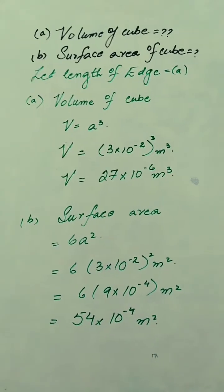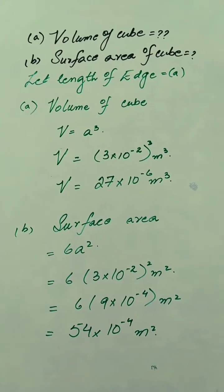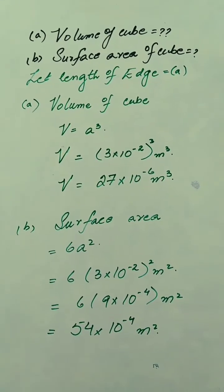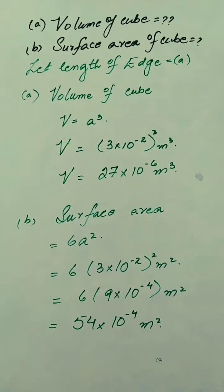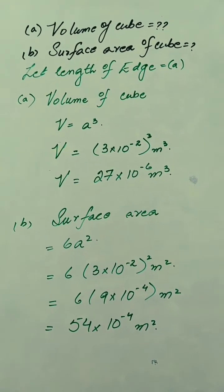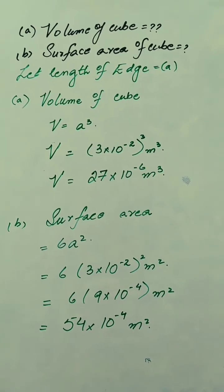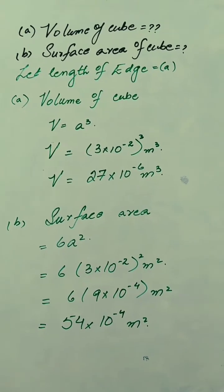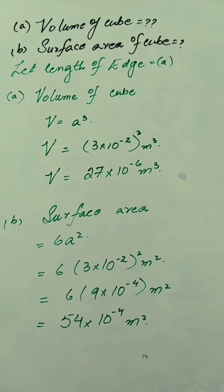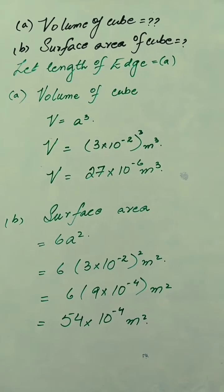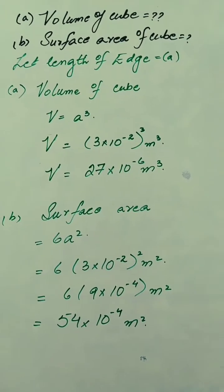For surface area, the formula is 6a². Substituting the value of a: Surface Area = 6 × (3×10⁻²)² m². After solving, the answer is 54×10⁻⁴ m².